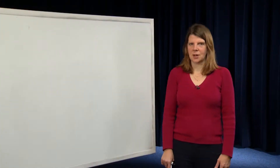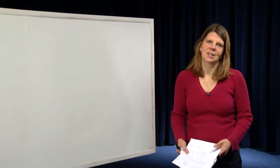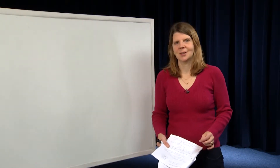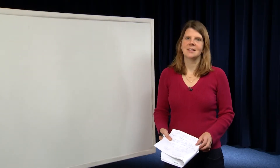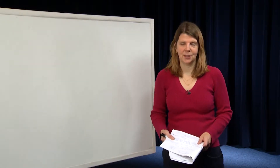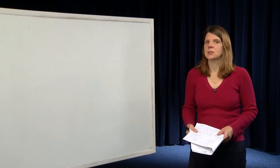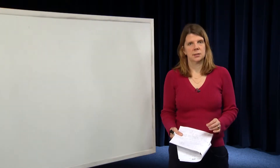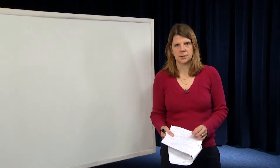Hi, everyone. My name is Claire Tomlin. I'm a professor of Electrical Engineering and Computer Sciences at Berkeley. This is the 21st module in a series of modules recording to support the course EECS 221A, Linear System Theory at Berkeley. This module is about the matrix exponential, which is the state transition matrix of a time-invariant linear system.